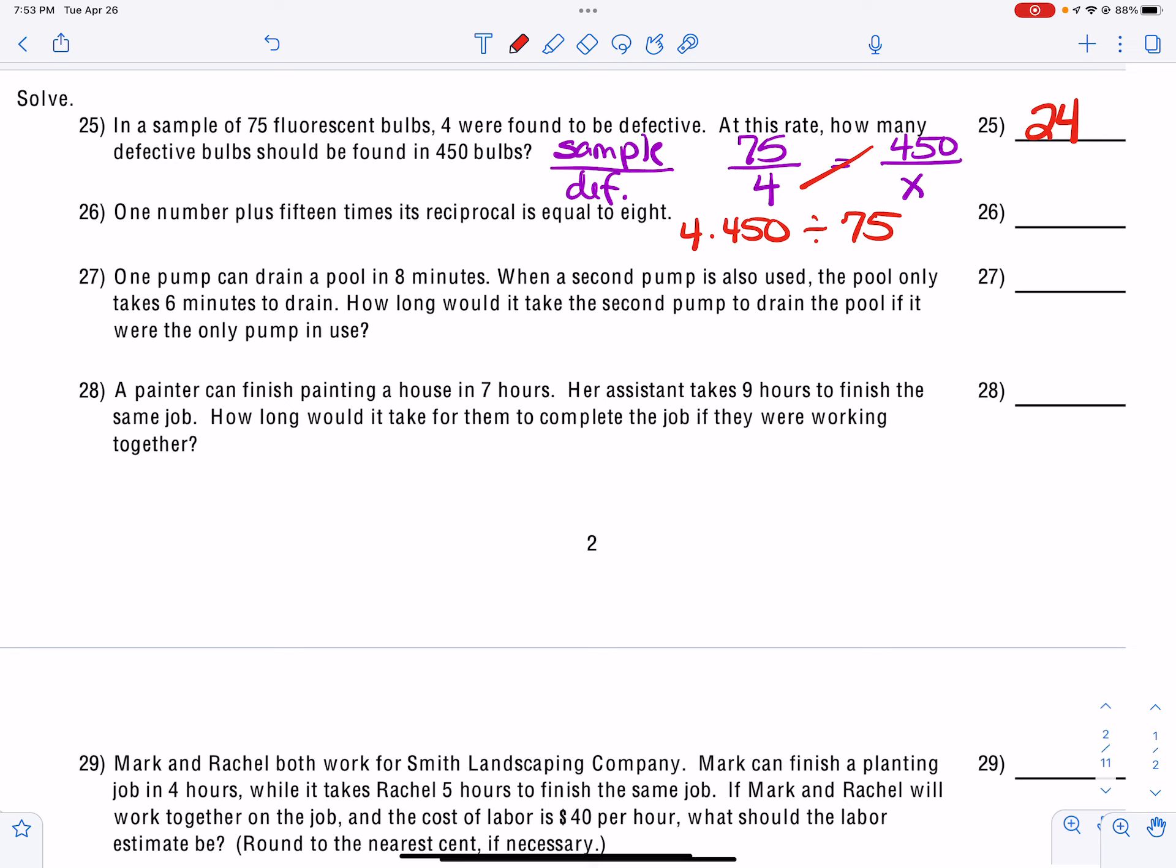Now for number 26, we have this missing number and it's going to be adding 15 times its reciprocal. So remember the reciprocal of a general number is one over X. So we have one number plus 15 times the reciprocal and that's equal to 8. So that's how we're going to set it up.